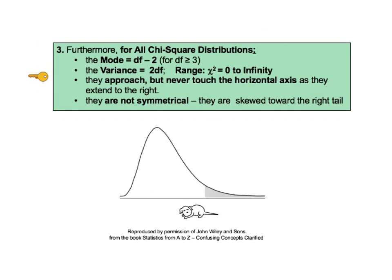Key to understanding number 3 says that for all chi-square distributions, the mode equals the degrees of freedom minus 2, for degrees of freedom greater than or equal to 3. The variance equals 2 times the degrees of freedom. Chi-square ranges from 0 to infinity along the horizontal axis, and the distributions approach but never touch the horizontal axis as they extend to the right to infinity. They are not symmetrical — they are skewed toward the right tail. The diagram here reminds us that in statistics, skewed to the right means the long tail of the distribution is to the right.